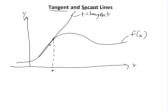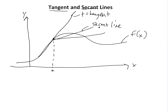A secant line is just any line that intersects the curve at two points. So this could be a secant line, and this could also be a secant line — these are secant lines.